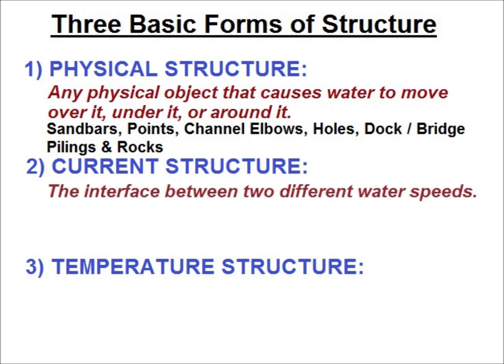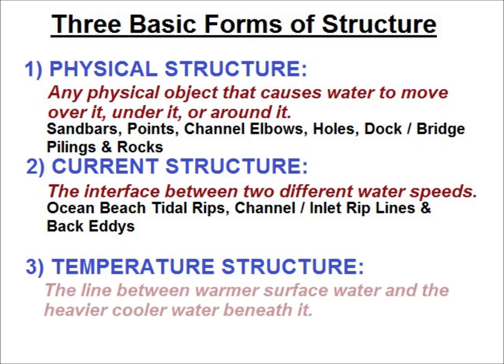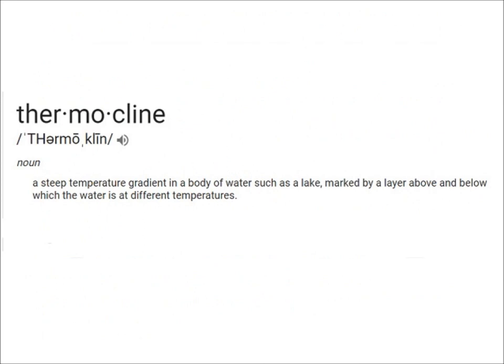Current structure is the interface between two different water speeds. You won't need to understand the physics of fluid dynamics to identify current structure, as it's pretty easy to spot. Examples are ocean beach tidal rips, channel and inlet rip lines, and back eddies. Temperature structure is basically the transition line between warmer and cooler water — the thermocline. It typically doesn't exist on the open beach except around inlets or outflows, but can affect calmer backwaters and bay systems, particularly those with deeper water.